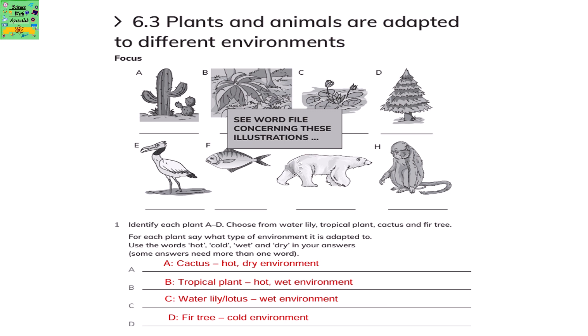Plants and animals are adapted to different environments. Identify each plant A to D. Choose from water lily, tropical plant, cactus and fir tree. For each plant, say what type of environment it is adapted to. Use the words cold, hot, wet and dry in your answers.